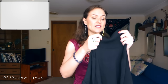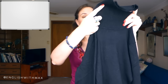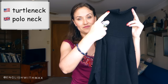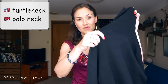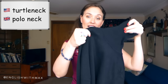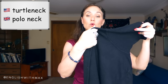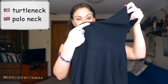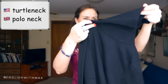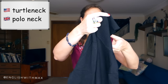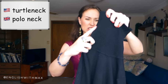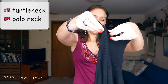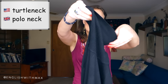In the US, this type of top is called a turtleneck. In the UK, it's called a poloneck. In case you can't see exactly what it is — it's got a long collar that you can roll down.